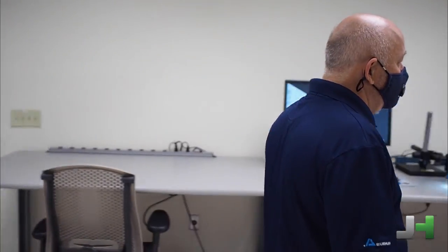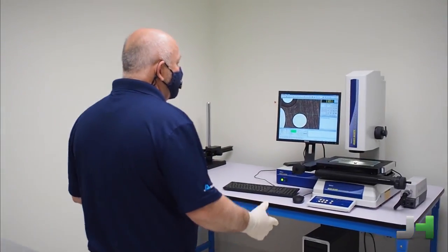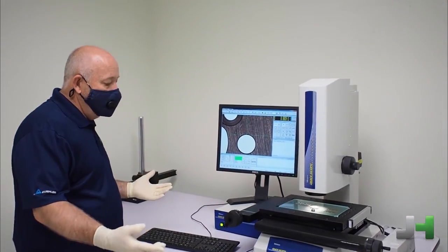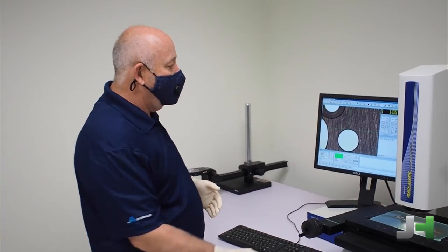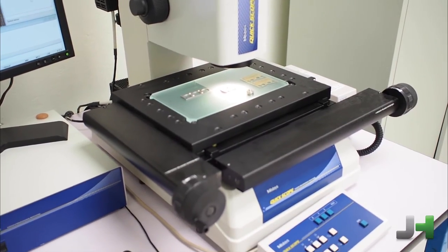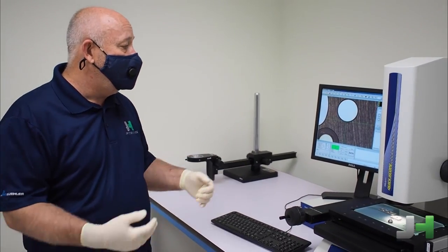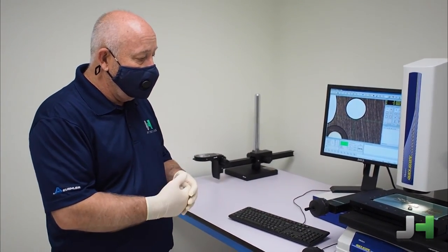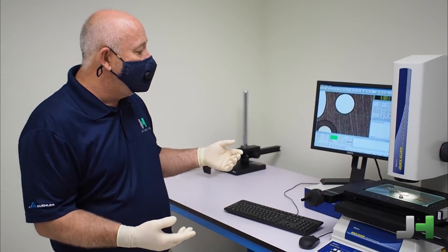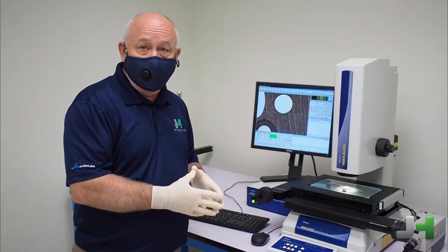We have an imaging station here. And then over here, we have a quick scope, which is the manual version of the quick vision. There's some automation to it. So snap to grid or snap to edge works very well on this tool, but it gives you all kinds of capabilities, but in a manual fashion.